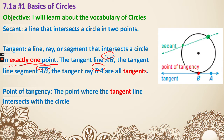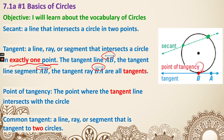Point of tangency is the point where the tangent line intersects with the circle. So this point B right here - that is the point of tangency. And last, we have common tangent, which is a line, ray, or segment that is tangent to two circles. We'll have a look at some examples about that to see how circles can share the same tangent.